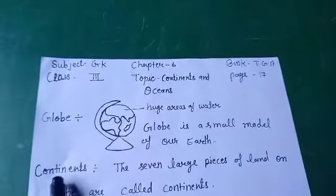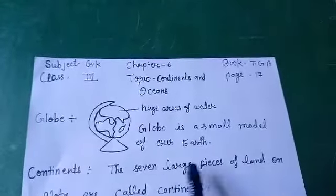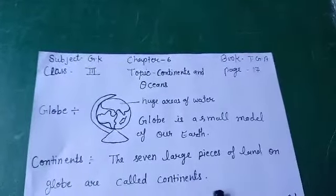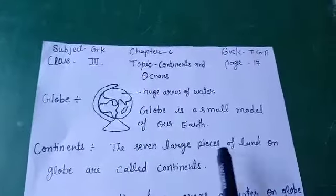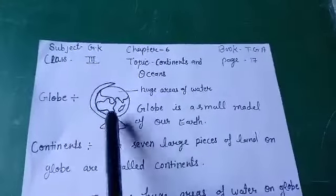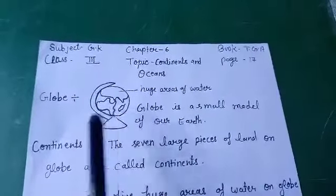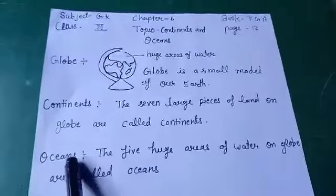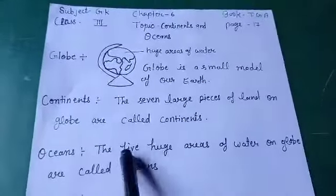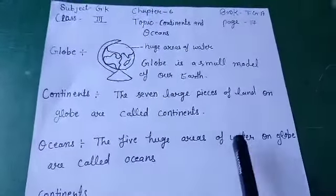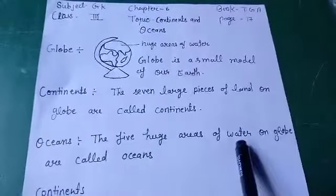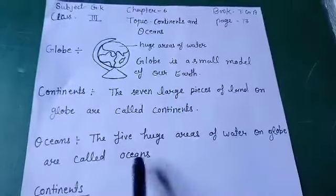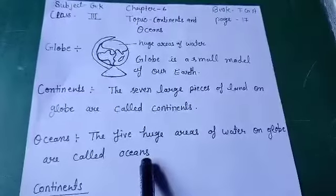What do you mean by continents? The 7 large pieces of land on our globe are called continents. And what do you mean by oceans? The 5 huge areas of water shown on the globe are called oceans — उन्हें ही हम महासागर कहते हैं.